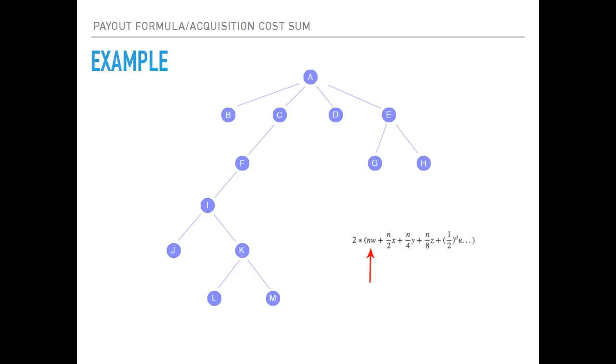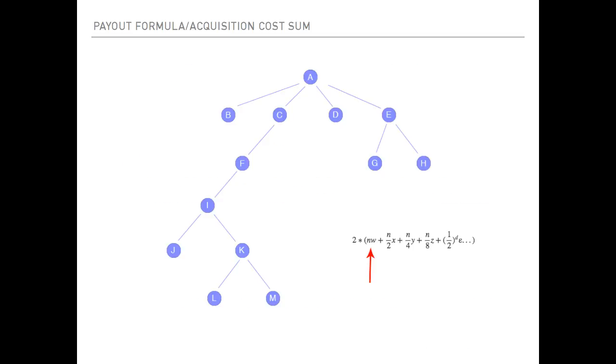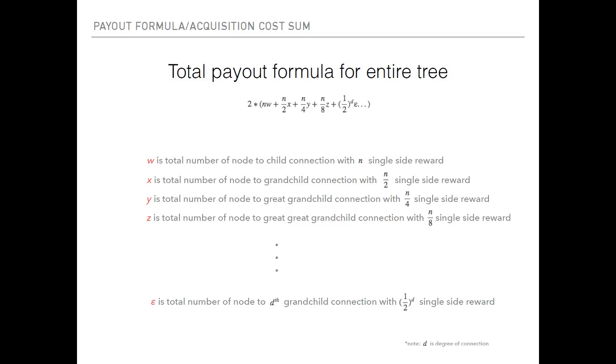Node-to-child connection basically translates to the edge between each node, so you count total number of edges. N is the single-sided reward. So we just count total, and then we start with A and B—that's one edge. Then you go down: A and C as another, A and D, A and E, C and F, E and G, E and H as well. Once you add all those up, it equals 12.